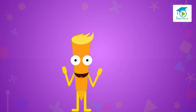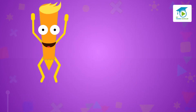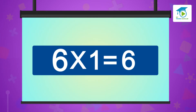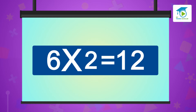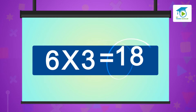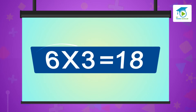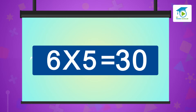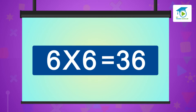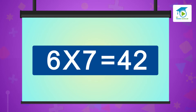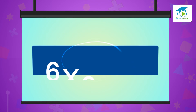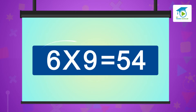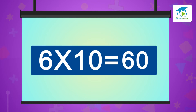So don't be in a fix, and let's quickly sing the Table of Six. Six ones are six, six twos are twelve, six threes are eighteen, six fours are twenty-four, six fives are thirty, six sixes are thirty-six, six sevens are forty-two, six eights are forty-eight, six nines are fifty-four, six tens are sixty.